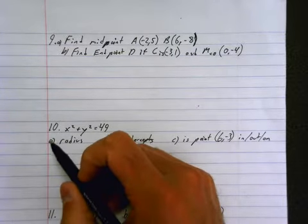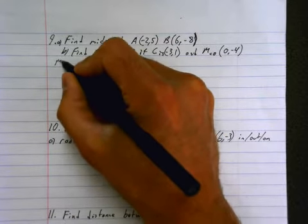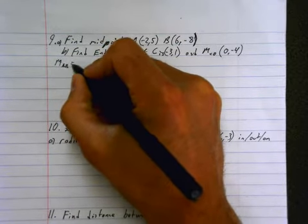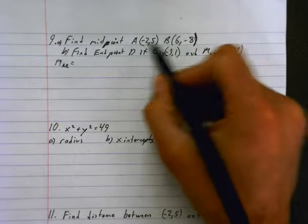Number 9. Find the midpoint of these two points, A and B there. Now my midpoint AB is going to be equal to... Well, to find the midpoint,